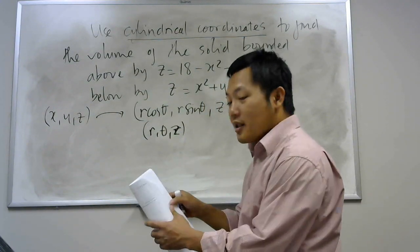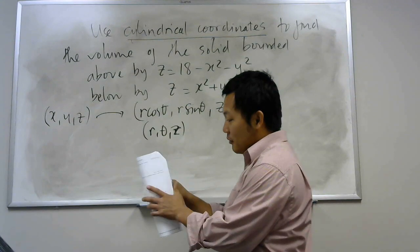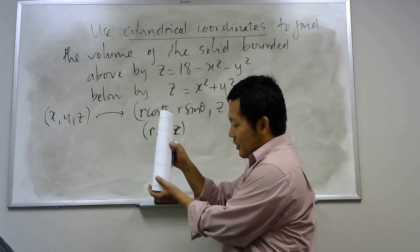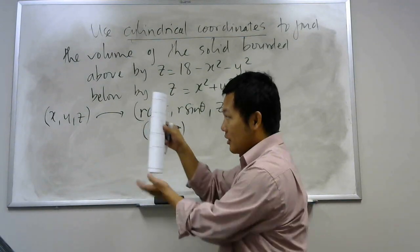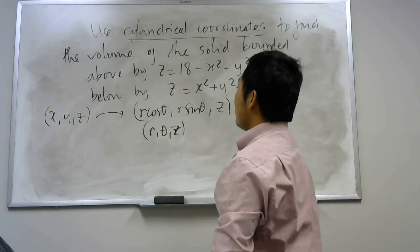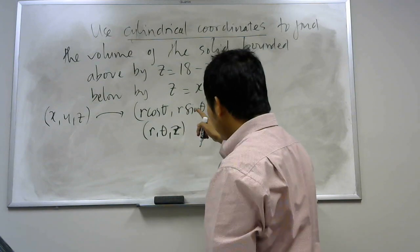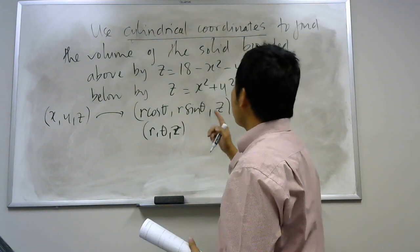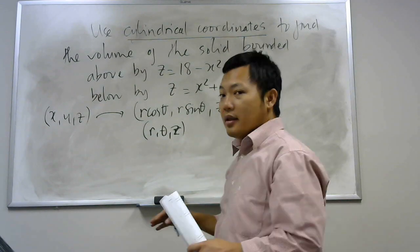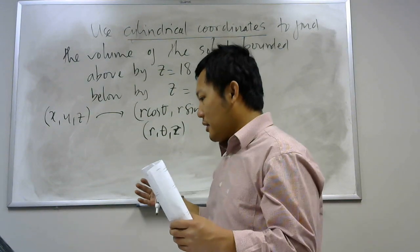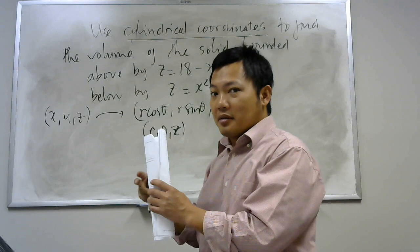This means you don't change z, so if you don't change z, the picture should look like a cylinder, because that is the z axis. So these coordinates are extremely useful when you have some solid that looks like a cylinder.